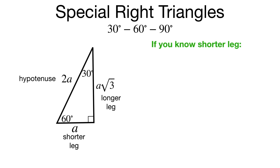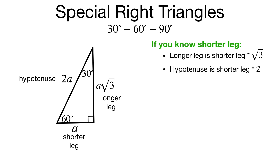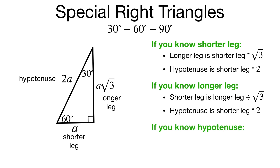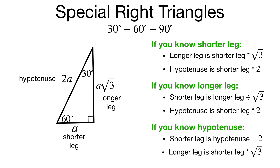If you know the shorter leg, you can find the hypotenuse and the longer leg easily: the longer leg is the shorter leg times the square root of 3, and the hypotenuse is the shorter leg times 2. If all you know is the longer leg, go back to the shorter leg first by dividing by the square root of 3, then multiply by 2 to get the hypotenuse. If you have the hypotenuse, divide by 2 to get the shorter leg, then multiply by the square root of 3 to get the longer leg. And that's really all there is to it.